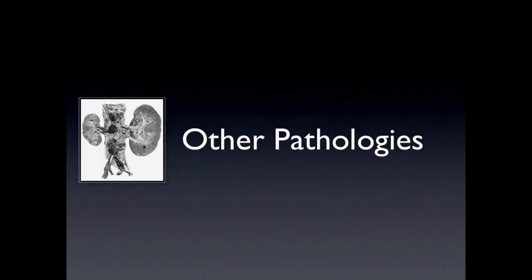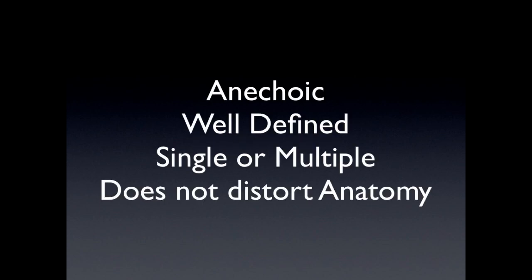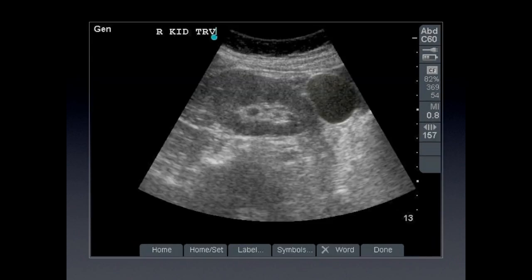Let's talk about some other pathologies visualized on ultrasound. Renal cysts are normally thought of as benign. They're anechoic, well-defined, single or sometimes multiple — like in the cases of polycystic kidney disease — and they usually do not distort the anatomy. Here you can see the liver with the kidney and the cyst as a well-circumscribed area. The same situation is shown on the right side — you have that cyst.